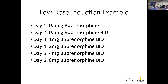A low dose induction schedule from the literature: Day one, a single dose of 0.5 mg buprenorphine — the patient won't notice this, it just gets a few molecules onto those opioid receptors. Day two, roughly double that, then progress to day six at 8 mg buprenorphine BID. At that point you have good receptor saturation with buprenorphine, the fentanyl the patient uses isn't doing as much, and ideally by day six the patient is completely off fentanyl without going through withdrawal, because they already have a good baseline buprenorphine activation.